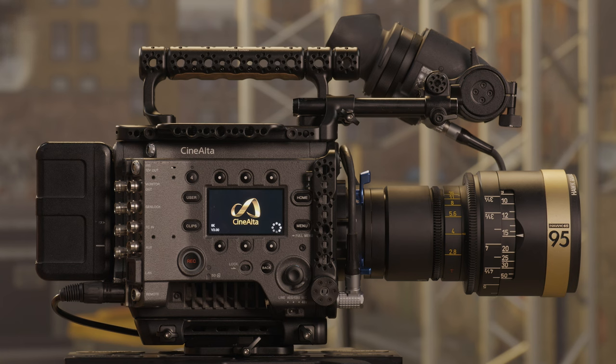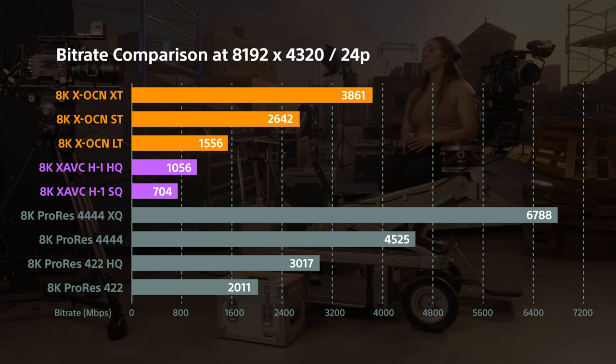If you choose to record in ProRes, the files will be in a 16:9 or 17:9 canvas. So there may be letterboxing or pillars depending on the imager mode you chose. And with the version 3 update, you can now record ProRes in an anamorphic imager mode, and the de-squeeze will be applied to the recorder. Here is a quick representation showing the different storage requirements for XOCN and ProRes in the Venice 2 8K sensor.